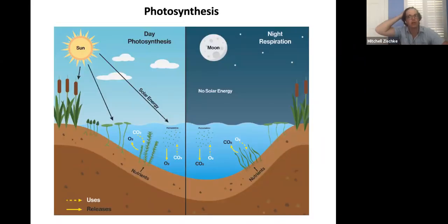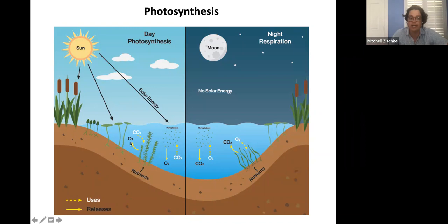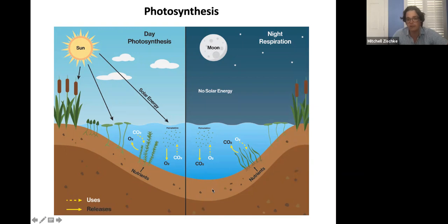Plants need to photosynthesize to grow. During the daytime they use up CO2 and release dissolved oxygen — that's where most of the dissolved oxygen in a pond comes from. At night this process reverses: plants breathe, using oxygen and releasing CO2. The importance for plant management is that when you have really high plant abundance, you can get big shifts in oxygen levels — saturation in the daytime because plants are producing oxygen, but quite low levels at night because plants are using it up.